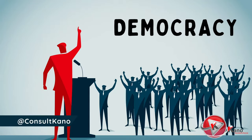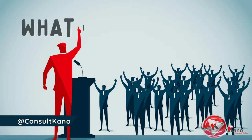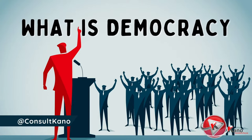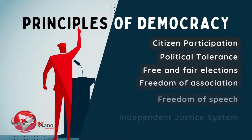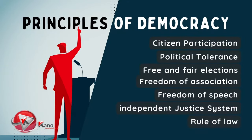Democracy is a process that only works if it is embedded in people's culture and routine. In this video, we will explain what democracy is and further discuss the various types of democracy available. We will also list the various principles of democracy.